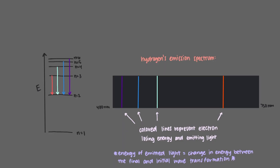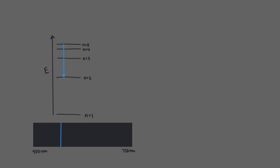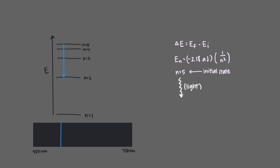We can calculate this change in energy, or energy emitted, using what we learned in the last video. This blue line represents the n equals 5 to n equals 2 electron wave transformation. Recall that all energy changes are ΔE equals E_final minus E_initial, and we know that the energy of a hydrogen atom electron wave is given by this formula. We start off with our electron with an n equals 5 wave as our initial state. When our electron undergoes its transformation, emitting energy as light, our new state is n equals 2, which is our n_final. That means the electron's change in energy for the n equals 5 to n equals 2 process is calculated as follows.